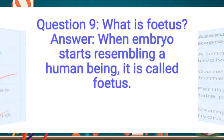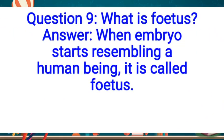Question number 9: What is a fetus? Pehle zygote tha, phir embryo, phir next stage hoti hai fetus. Answer: When the embryo starts resembling a human being — jab saare body parts banne shuroo ho jaate hain, jaise pair, aankh, naak — aur poori body structure ban jaati hai jise hum pehchaan sakein, us stage ko fetus bolte hain.